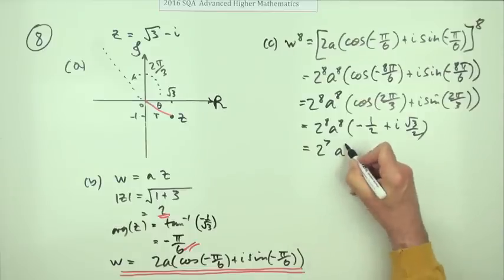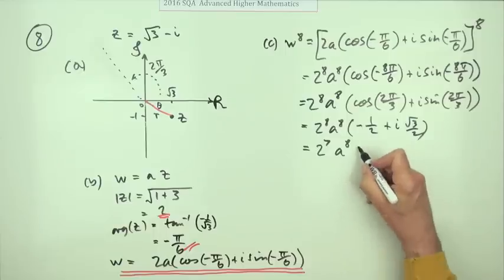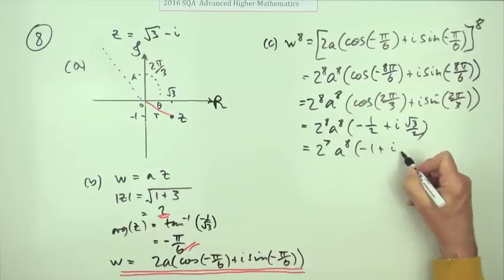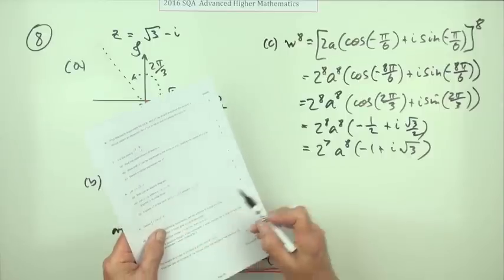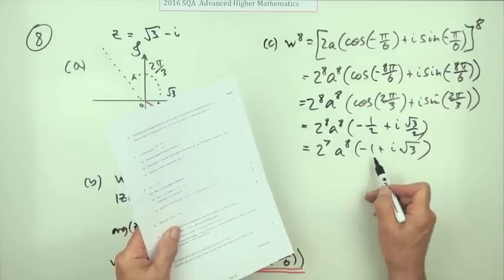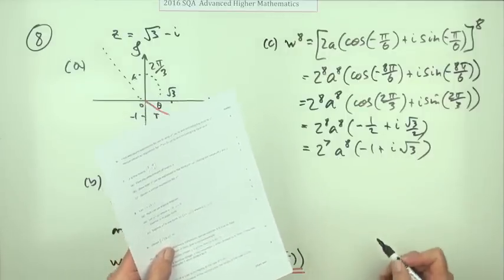The 2's can come out and take one of those away from it. 2 to the 7. So 2 to the power of 7, a to the 8 of negative 1 plus i times root 3. Looks pretty much like the required form. K a to the n, x plus i root y. That's it.